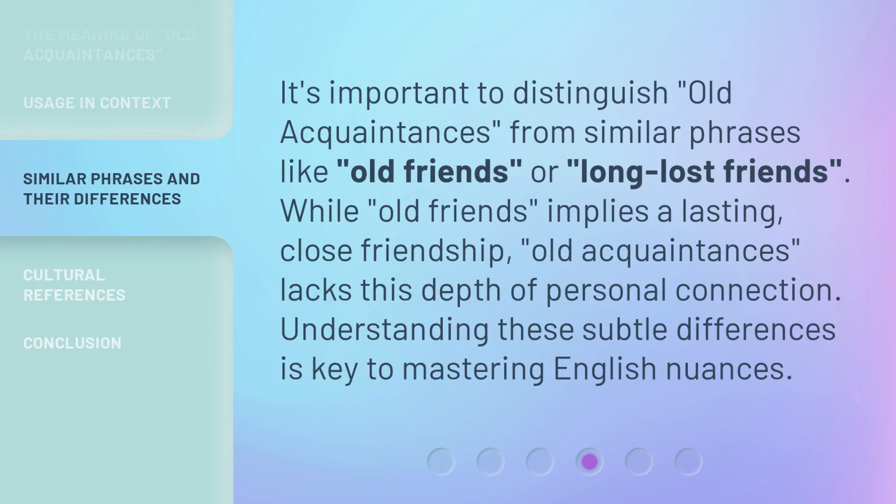It's important to distinguish old acquaintances from similar phrases like old friends or long-lost friends. While old friends implies a lasting, close friendship, old acquaintances lacks this depth of personal connection. Understanding these subtle differences is key to mastering English nuances.